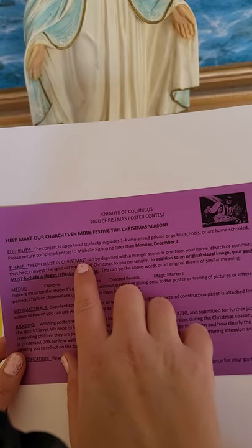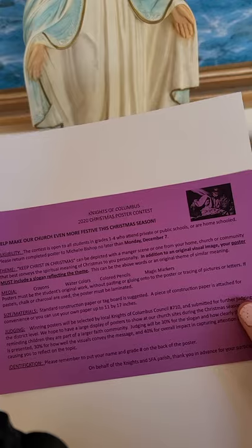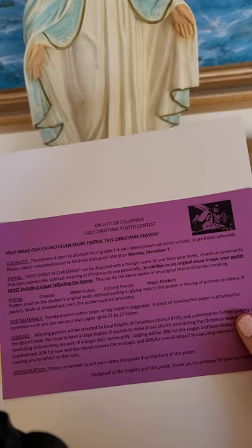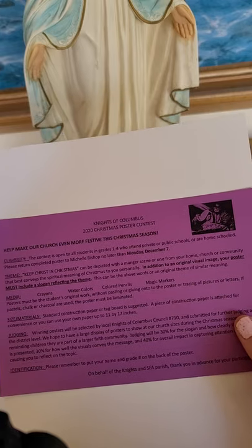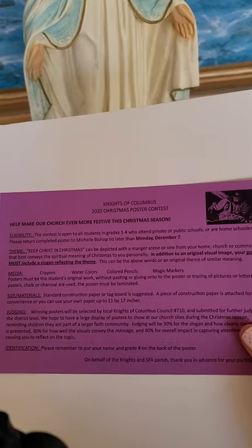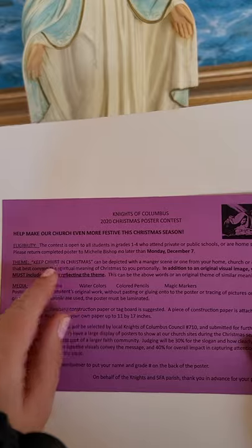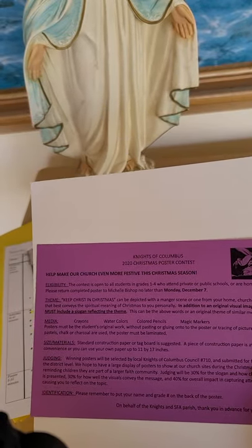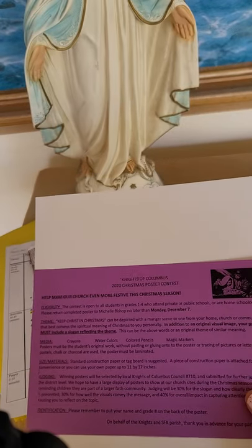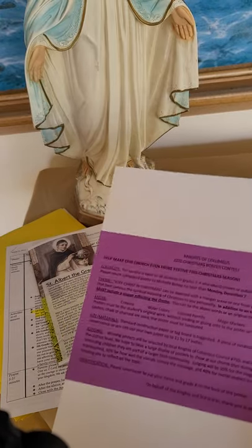Here it says: keep Christ in Christmas is the theme, and that can be depicted with a manger scene — that's where we see baby Jesus laying in the manger in the stable — or any kind of picture that you want to draw from your home, your church, or community that best conveys the spiritual meaning of Christmas to you as a kid. In addition to a drawing, you also have to have words — that's what a slogan is. It must have a slogan reflecting this theme. It could be 'keep Christ in Christmas,' or it could be something else. I like music a lot, so I think in terms of Christmas songs — maybe I might write the first couple of words of O Holy Night, or Silent Night, or maybe even the First Noel.